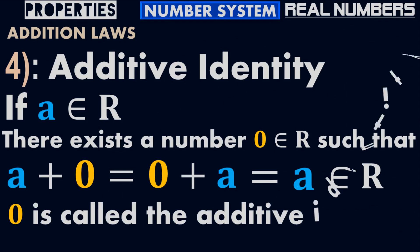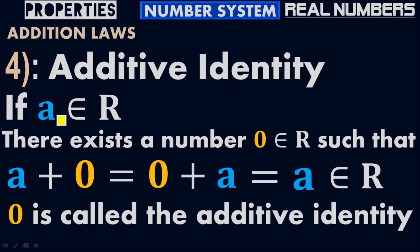According to the additive identity property, if A belongs to the real numbers, there exists a number 0 such that A plus 0 equals 0 plus A equals A. Because A plus 0 is A and 0 plus A is also A, therefore A plus 0 equals 0 plus A equals A.